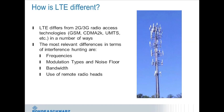On a technical level, LTE differs from previous radio access technologies in four main areas relevant to interference hunting: the frequencies at which LTE is commonly deployed in the United States, the types of modulation used and associated noise floor requirements, the bandwidth of LTE signals, and the use of remote radio heads. We'll discuss each of these in detail.